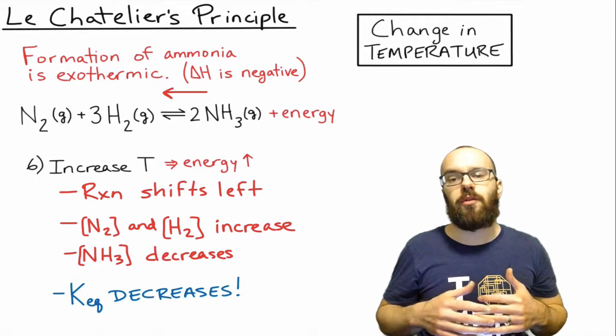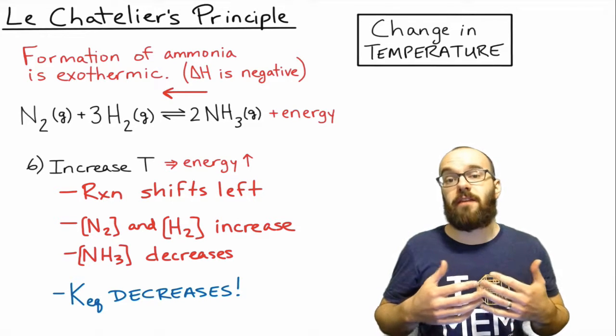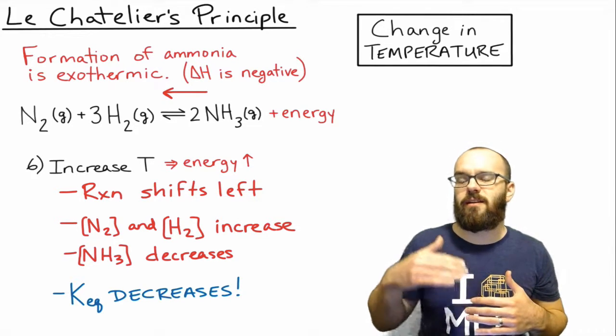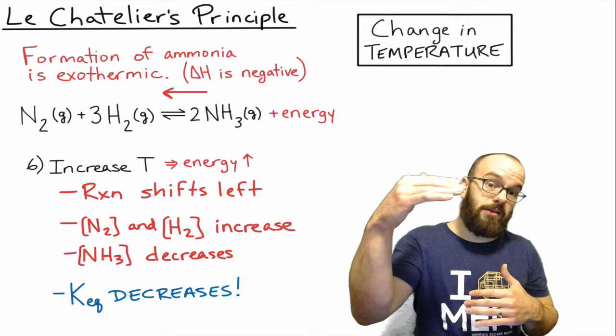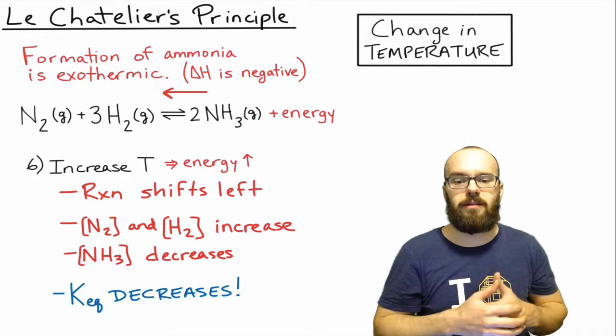If we were to shift it toward the products, that would mean that the K value would increase. Because remember, the K is the equilibrium product concentration over reactant concentration.